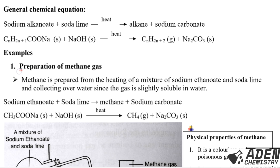Example one: preparation of methane gas in the lab. Methane is prepared from heating a mixture of sodium ethanoate and soda lime, and collecting over water since methane gas is slightly insoluble in water. The two reagents are sodium ethanoate and soda lime (from which we use sodium hydroxide in the equation). Sodium ethanoate plus soda lime gives methane gas and sodium carbonate.